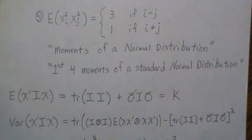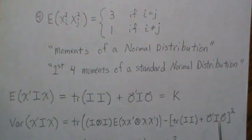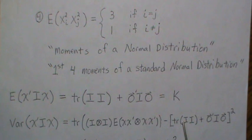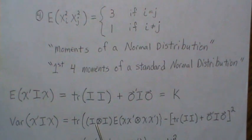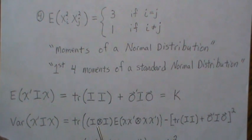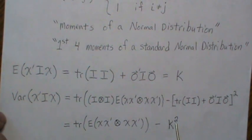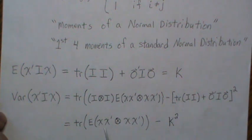Now for the variance, the formula from result three gives us this expression. The mean is zero so those terms vanish, though I wrote them out to show the formula holds. This squared mean term equals k², so it's k². The Kronecker product I⊗I is just another identity matrix, so that simplifies, and we're left with k² plus the trace of the expected value of the Kronecker product expansion.